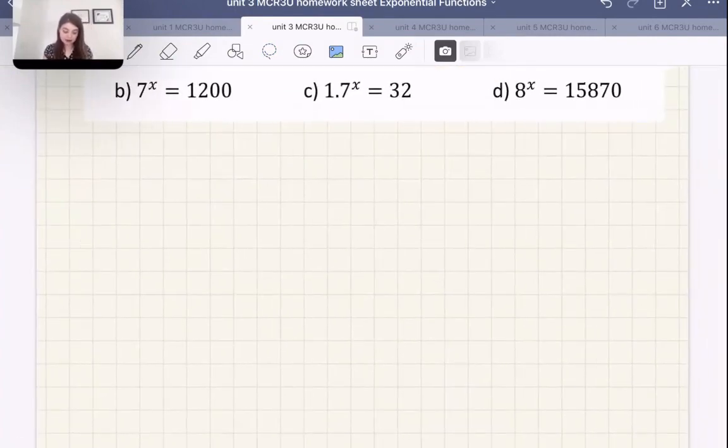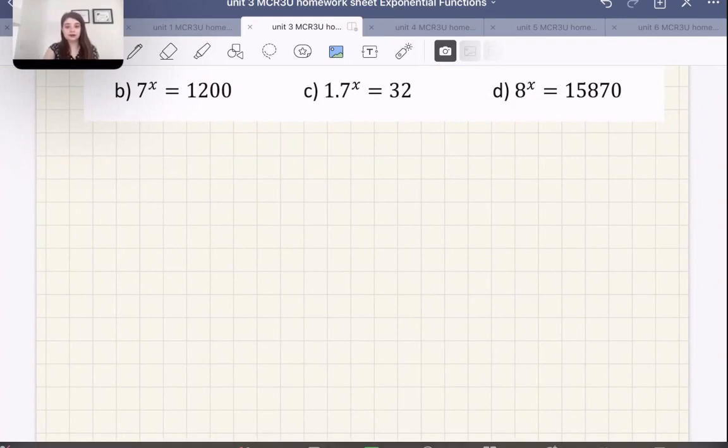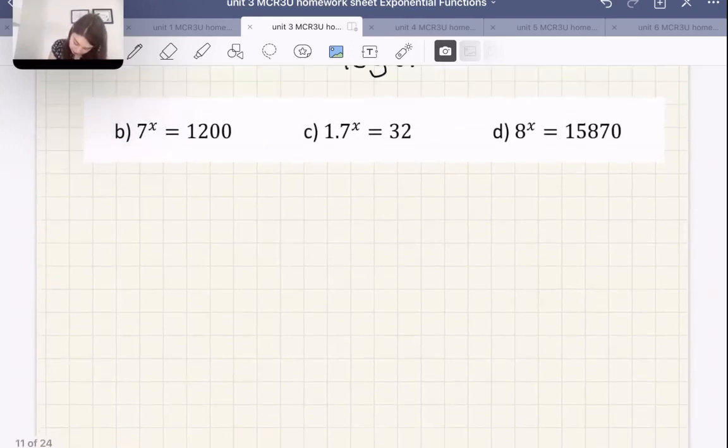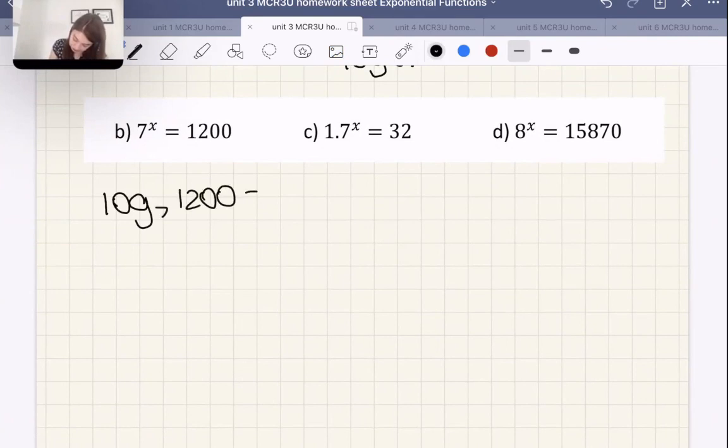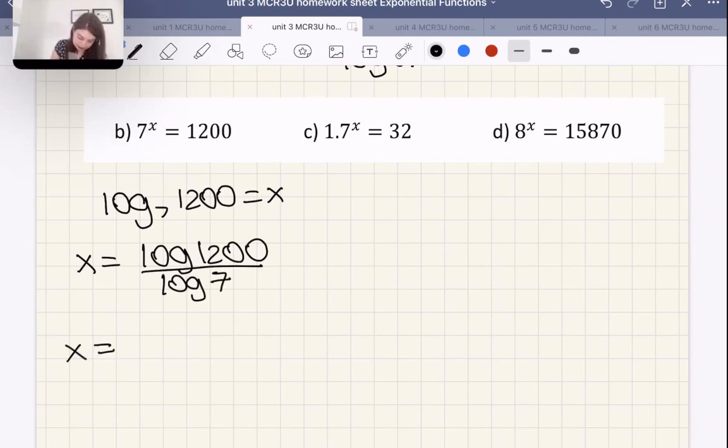Let's talk about the second one, which is 7 to the power of x is 1,200. Log with a base 7, 1,200 equals to x. Our second step should be that x equals log 1,200 over log 7. So x is equal to, let's see, let's punch it in the calculator. So that's 3.079, which makes sense because we expected log of 1,200 to be slightly greater than 3. Because log 1,000 or 10 to the power of what is 1,000 would be exactly 3. So we expect this to be a little bit greater.